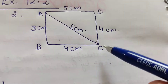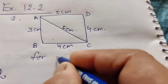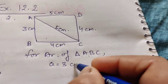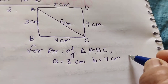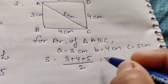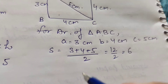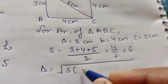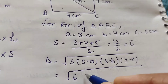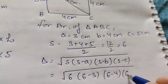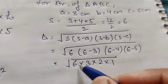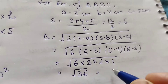Here are two triangles ABC and ADC. For the area of triangle ABC: side A equals 3 cm, B equals 4 cm, C equals 5 cm. S equals (3 plus 4 plus 5) by 2, which is 12 by 2, equals 6. Area equals under root of 6 into (6−3) into (6−4) into (6−5), giving under root of 6 into 3 into 2 into 1, which equals under root 36, which is 6 centimeter square.